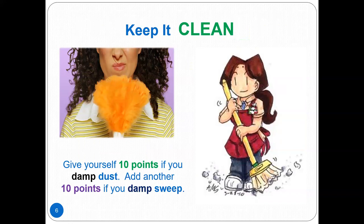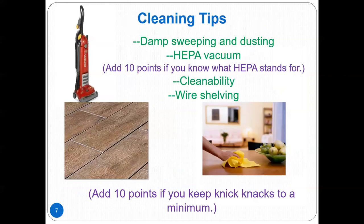The second principle is keep it clean. Give yourself 10 points if you damp dust, and another 10 points if you damp sweep. You should always dust from top to bottom and use a two-bucket system: one bucket with warm soapy water and a second bucket with clean rinse water, changing the water frequently. Make sure you purchase a vacuum cleaner with a HEPA filter — high energy particulate air — which removes dust mites. You do not have to spend a lot of money, but you should get a vacuum cleaner with a beater bar to help pick up dust.